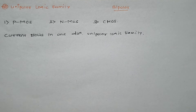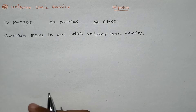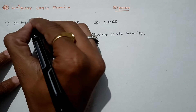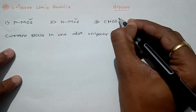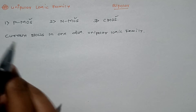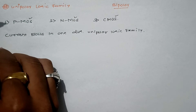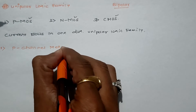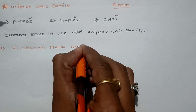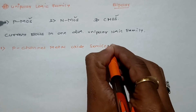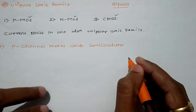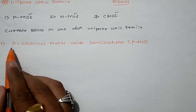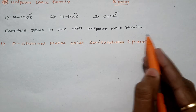In analog circuits you may have seen BJT — bipolar junction transistors — and unijunction transistors. For a unipolar logic family, we will first discuss PMOS, then NMOS, and finally CMOS. Let's start with the first category, called P-channel Metal Oxide Semiconductor, which is in short called PMOS.